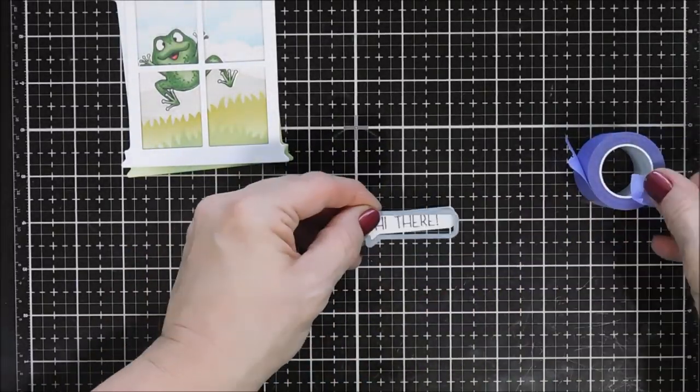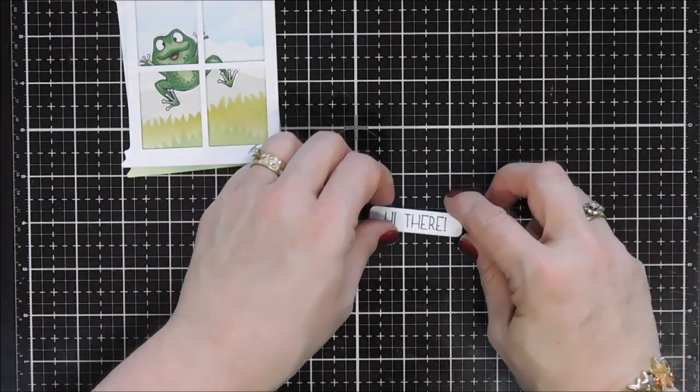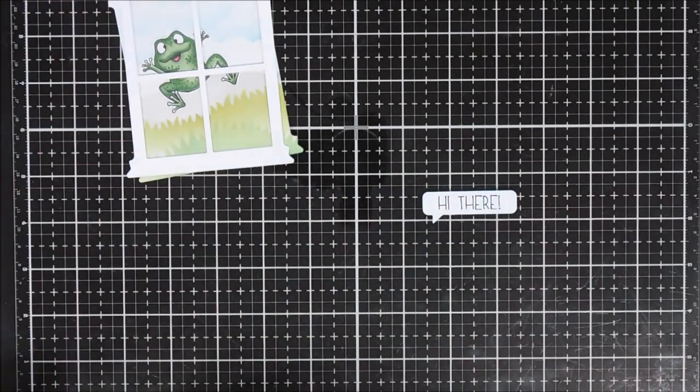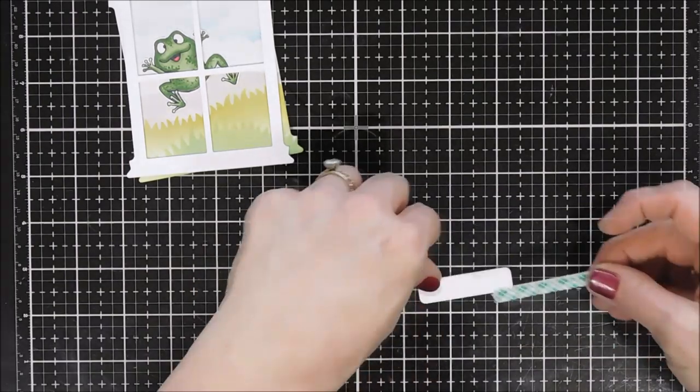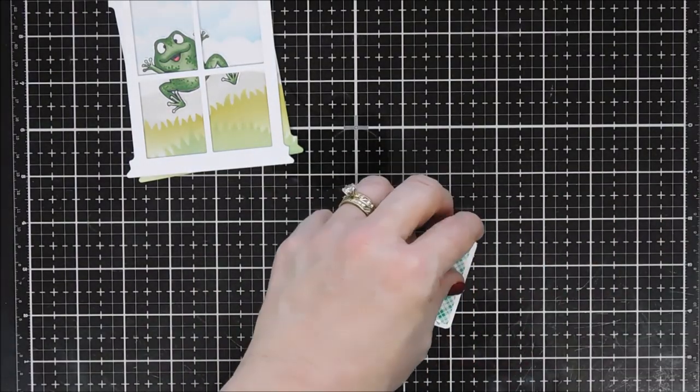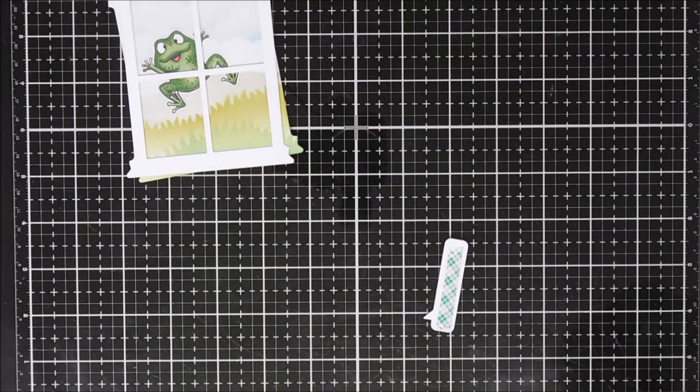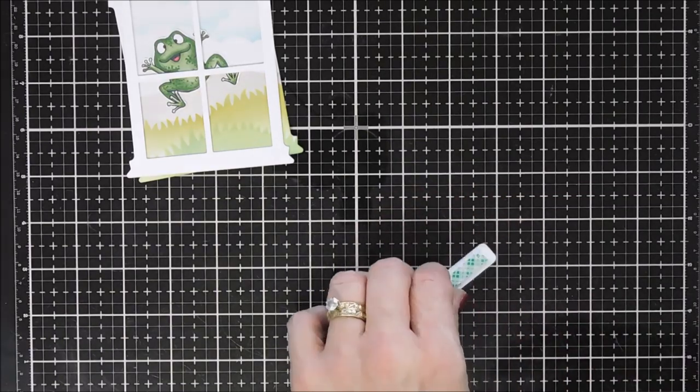We'll add a piece of foam tape behind here and our sentiment's going to go on the outside of the window. I suppose we could have put it on the inside but I was afraid the window panes would kind of obstruct the sentiment so the outside looks just as nice.